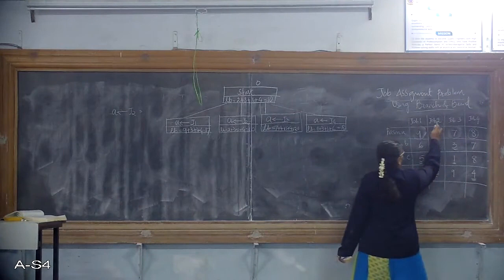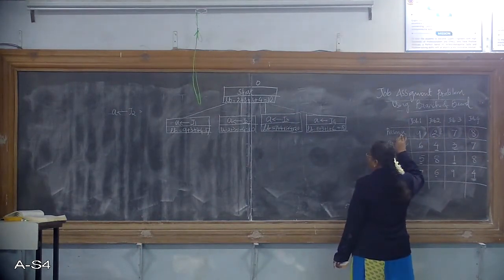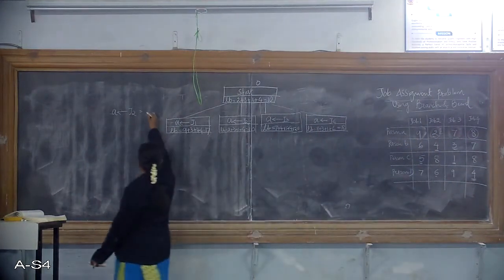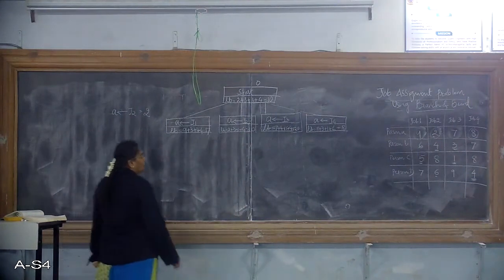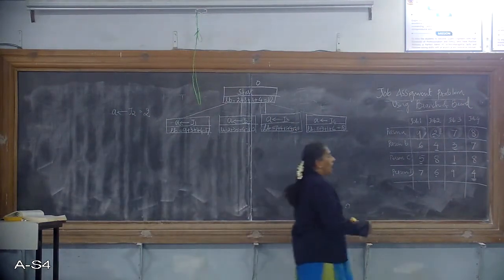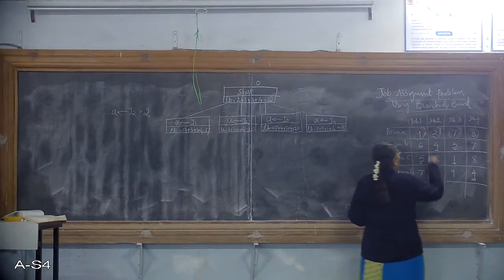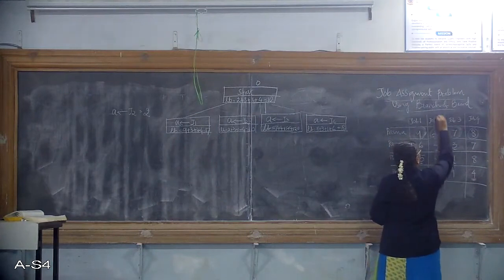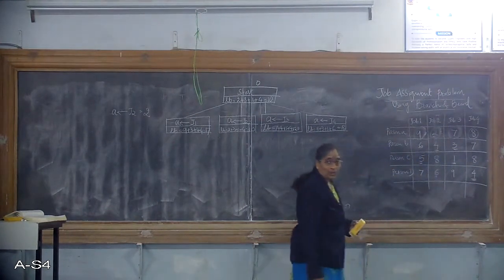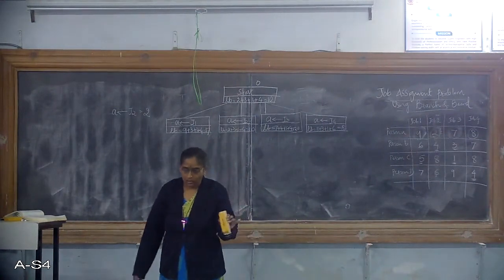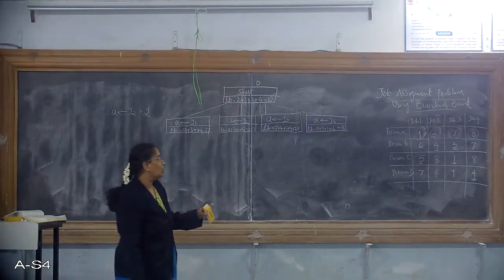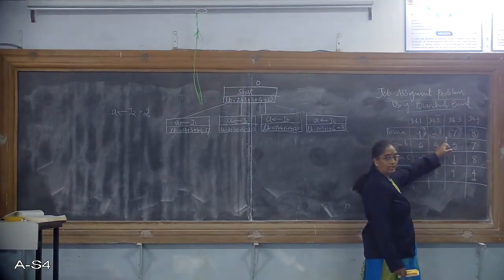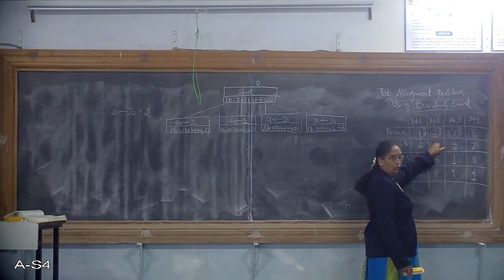Job J2 is assigned to person A, and that is a feasible solution. The cost associated is 2. After assigning job J2 to person A, we remove this column since it is no longer required. After the first iteration, we know that assigning job J2 to person A gives the least lower bound value.